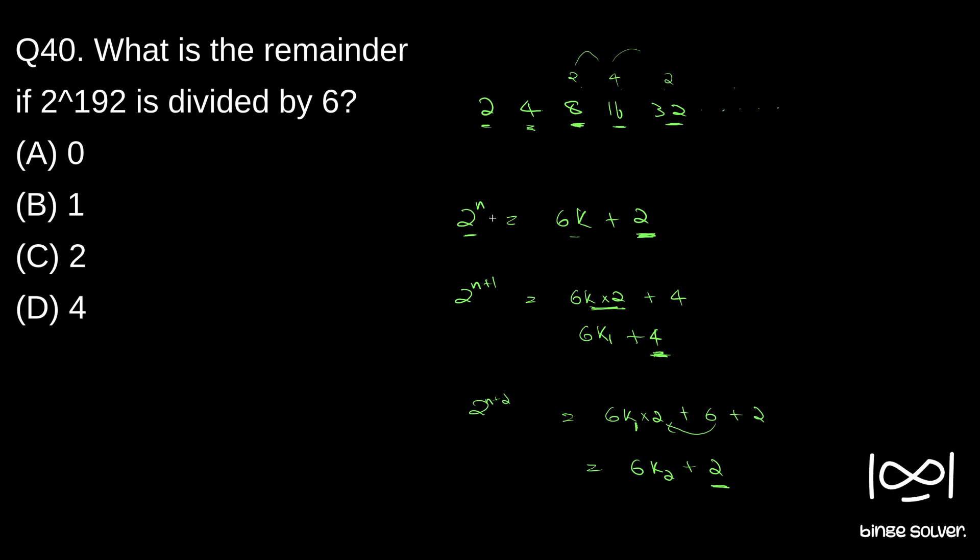That's why the remainder is repeating. So the only thing we have to find is: if you see 2 raised to 1, 2, 3, odd numbers, if it is an odd number remainder will be 2. If it is an even number, the remainder will be 4. So 2 raised to 192—192 is an even number—so remainder will be 4. Solution to question 40 is D, 4.